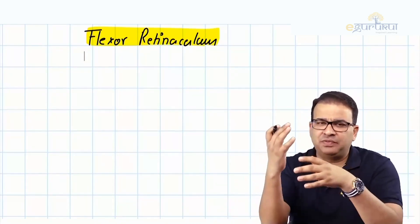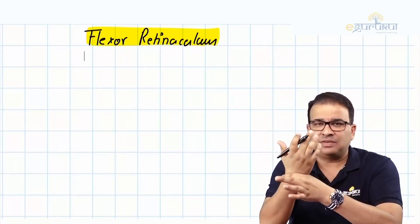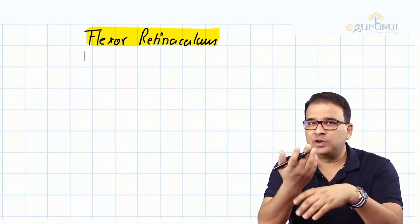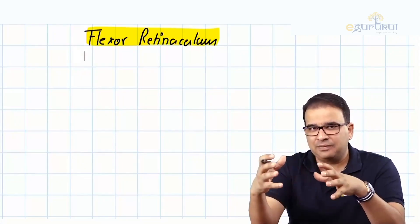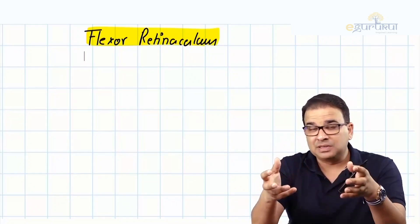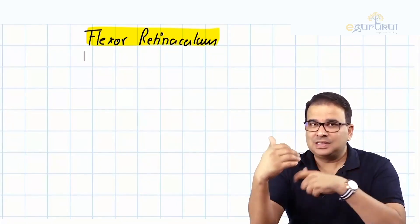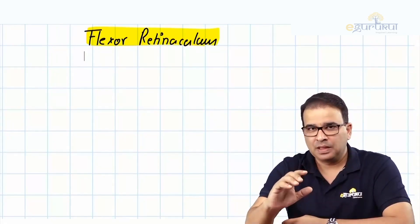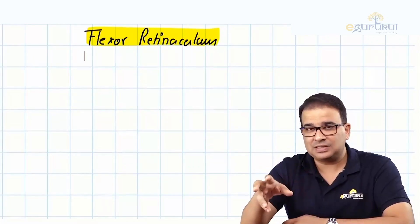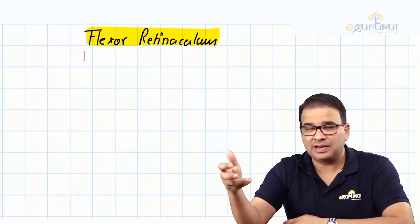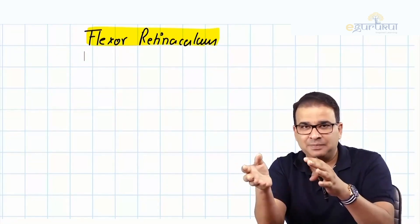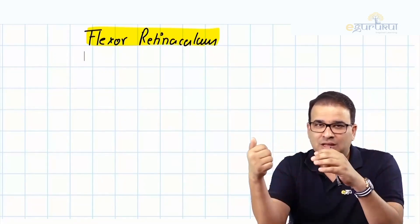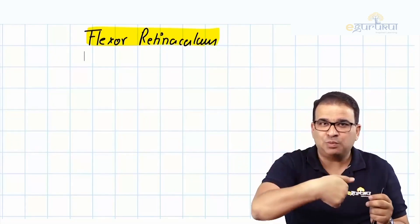Flexor retinaculum — unlike at the wrist where we have the flexor and extensor retinaculum, one on the palmar aspect and one on the dorsal aspect — it's not exactly the same in the foot because we have three compartments of muscles going down. The extensor retinaculum is conventional as it is on the dorsal surface. But the flexor retinaculum and the peroneal retinaculum are present more toward the medial and lateral sides. The flexor retinaculum is situated on the medial and posterior medial aspect.